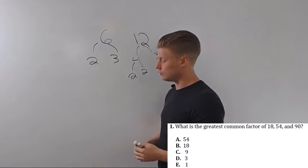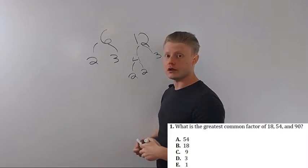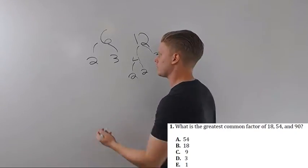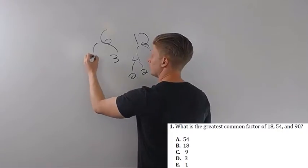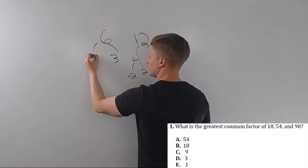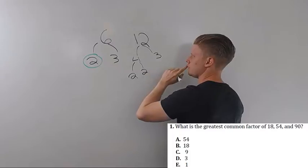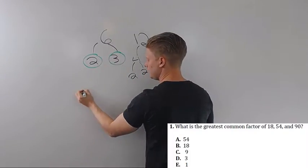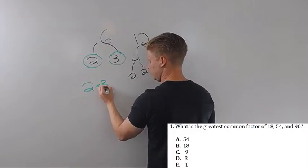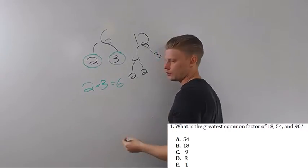Now to find the greatest common factor, I take the least occurrence of each prime factor. So we got some twos, but there's only one here, so I'll take that. There's one 3 on each of these, so I'll take one 3. 2 times 3 is 6, and that's our greatest common factor.